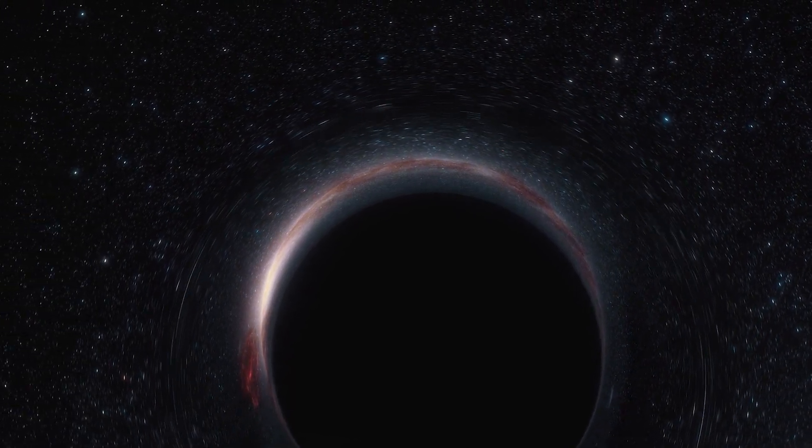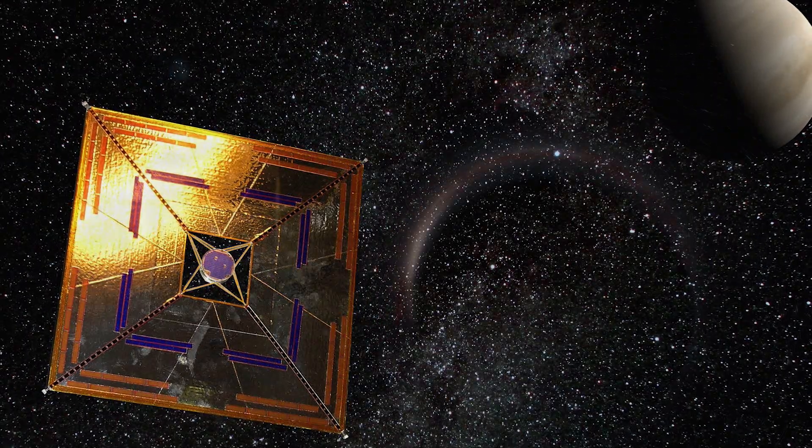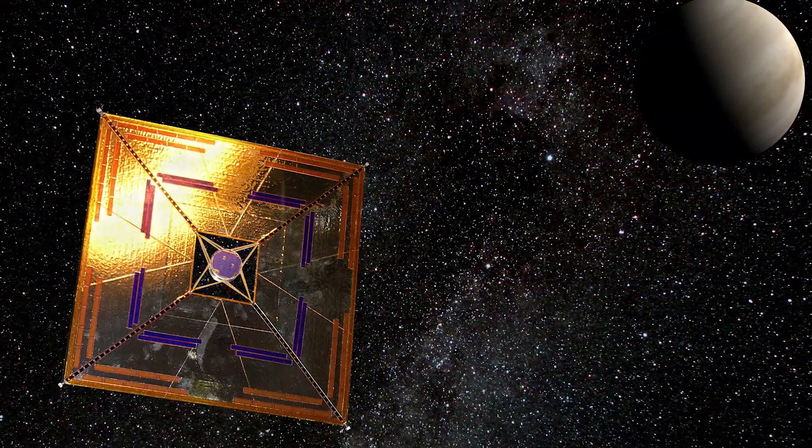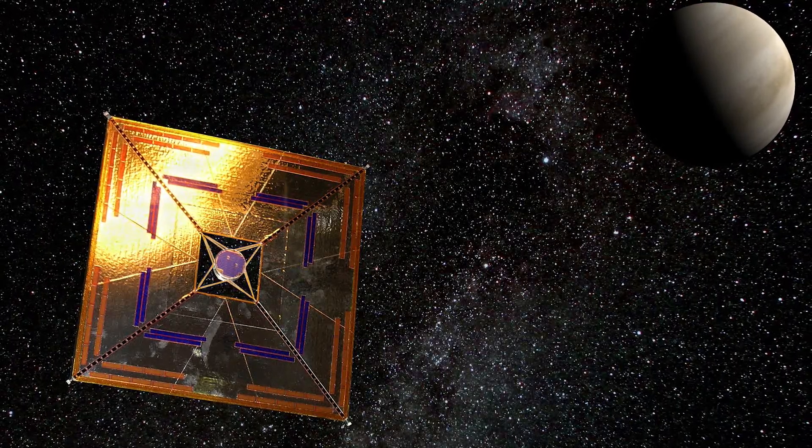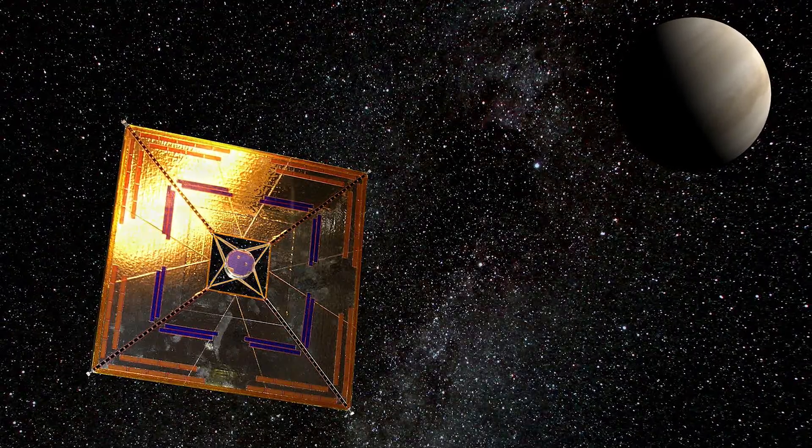Solar sails, also called light sails or photon sails, are a method of propelling spacecraft using radiation pressure exerted by sunlight all by itself. A number of space missions utilizing solar propulsion have been proposed since the 1980s.